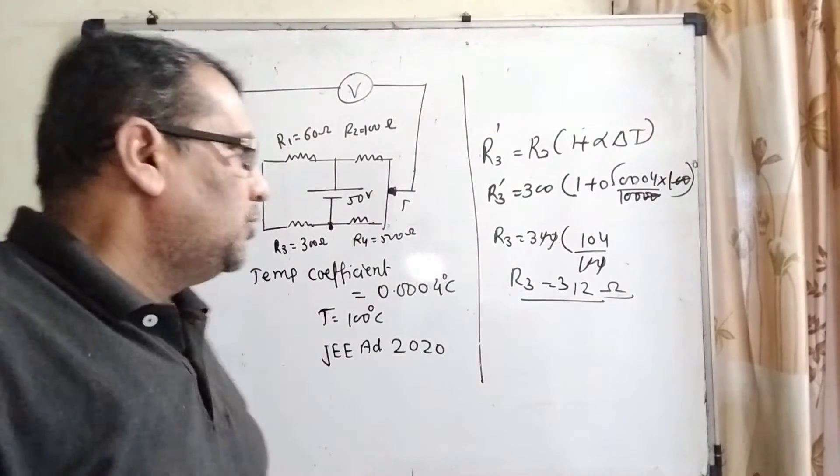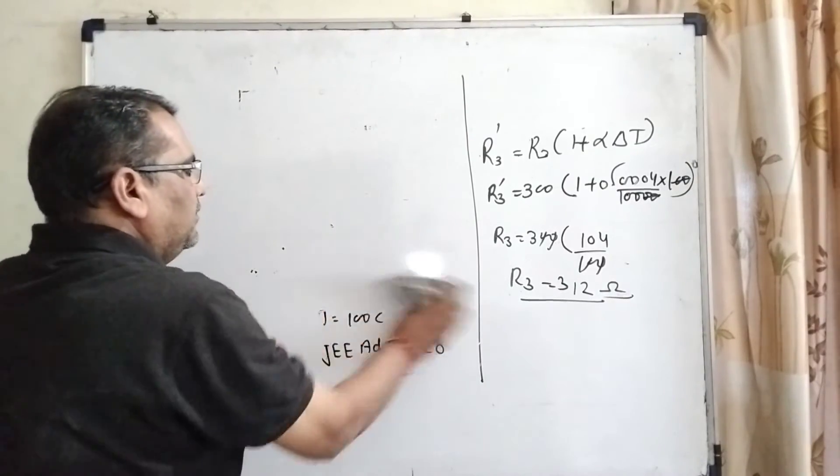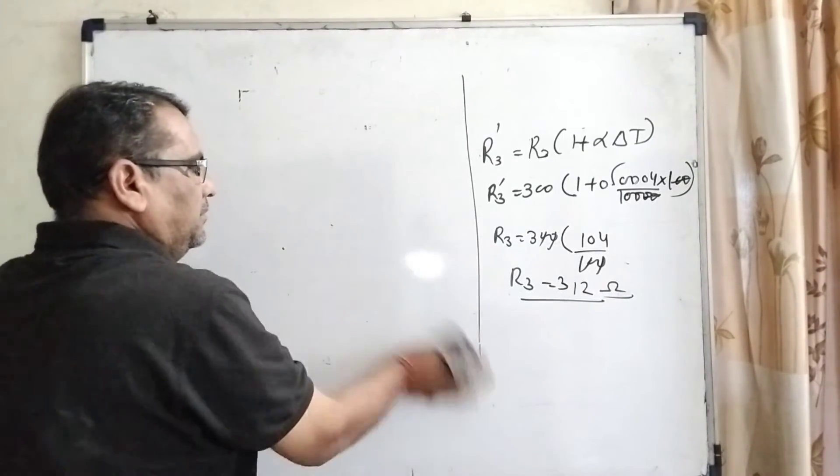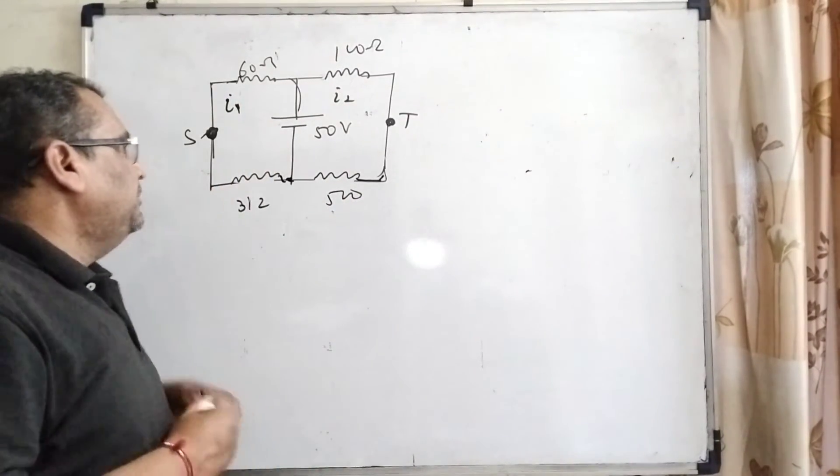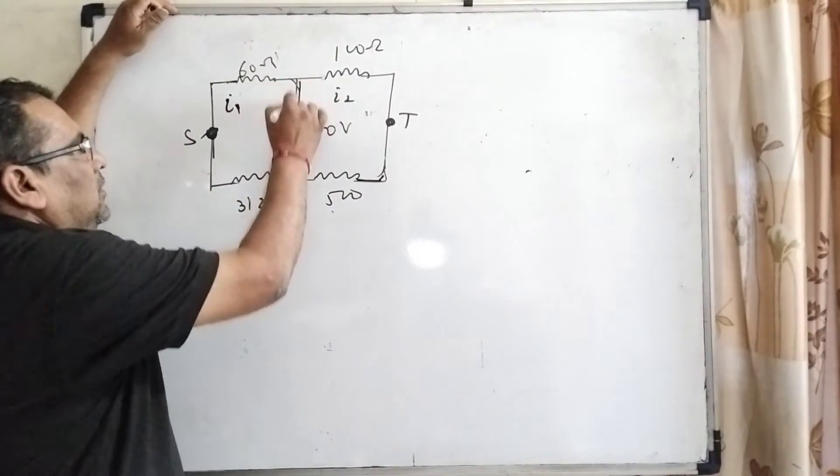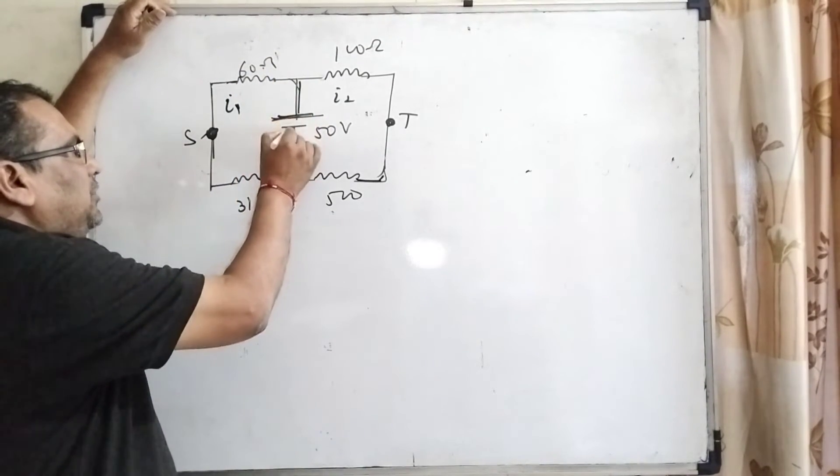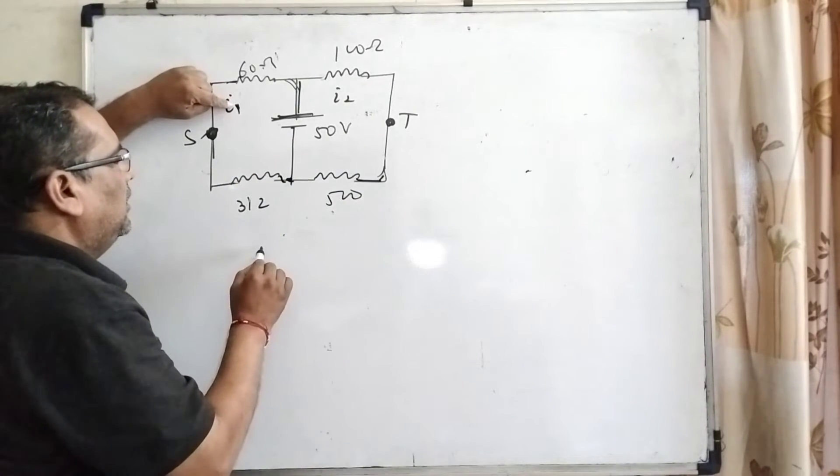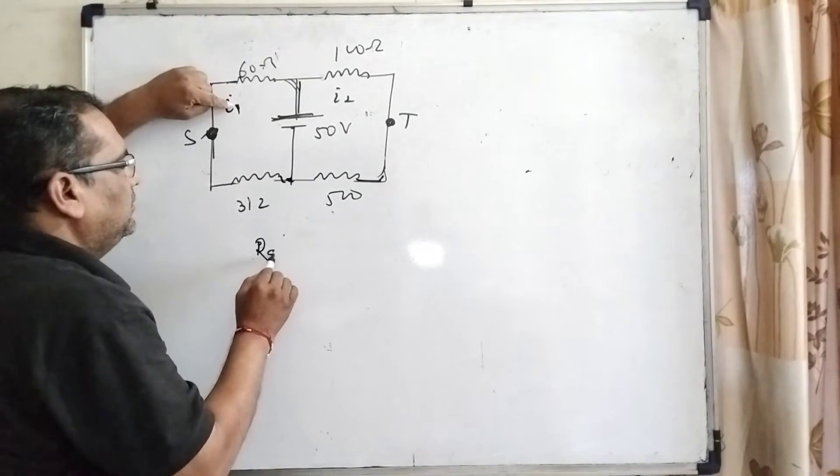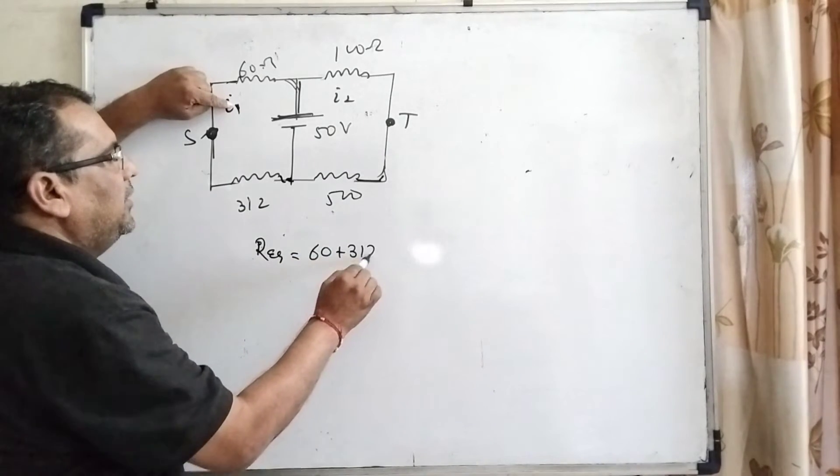So now we have to redraw this diagram again. Now you can see here 60 and 312 are connected to this battery in series. So the equivalent resistance becomes 60 plus 312, which equals 372 ohms.